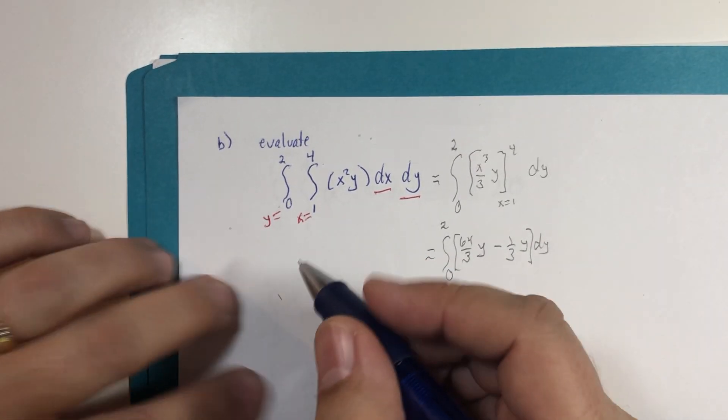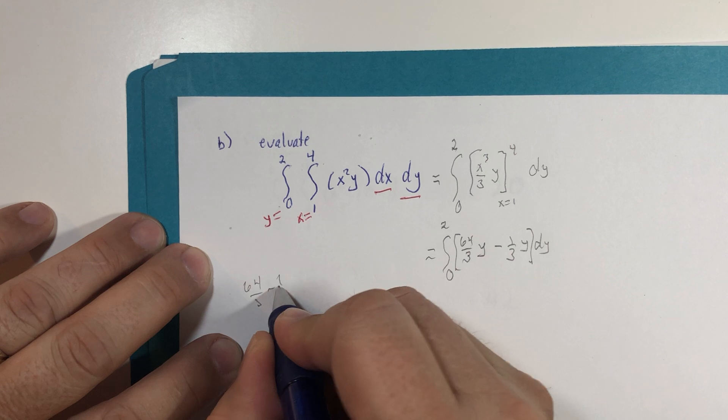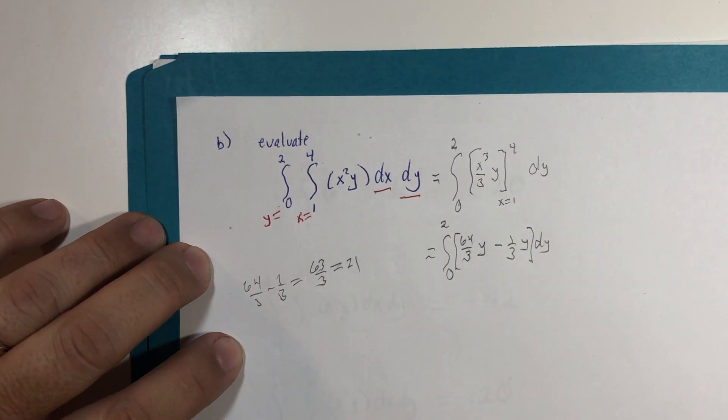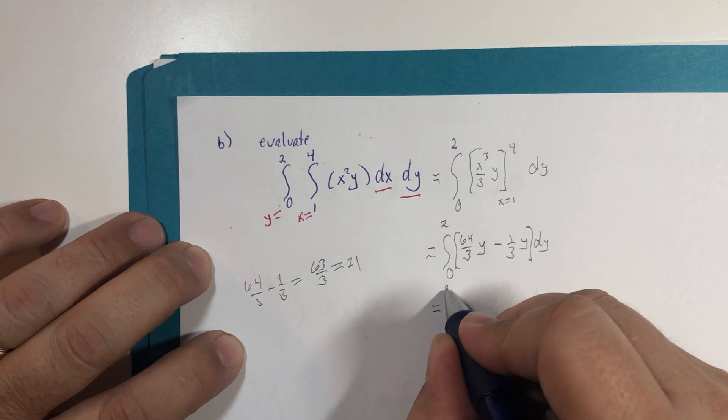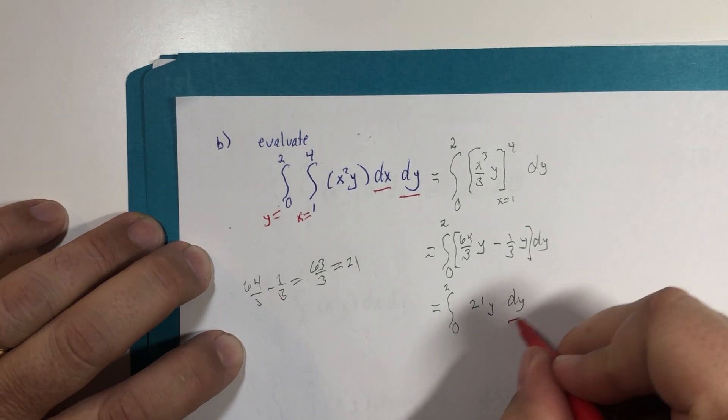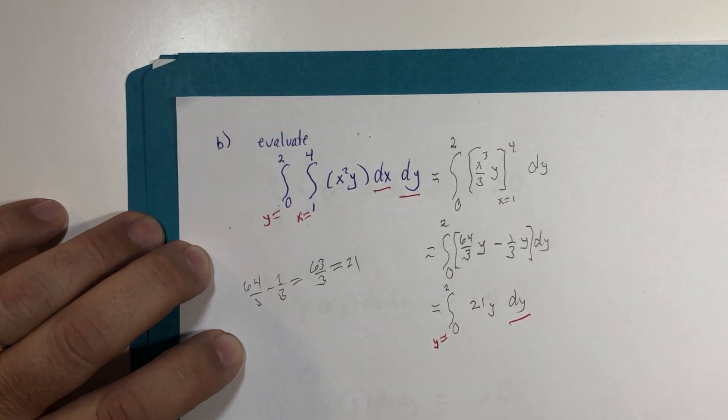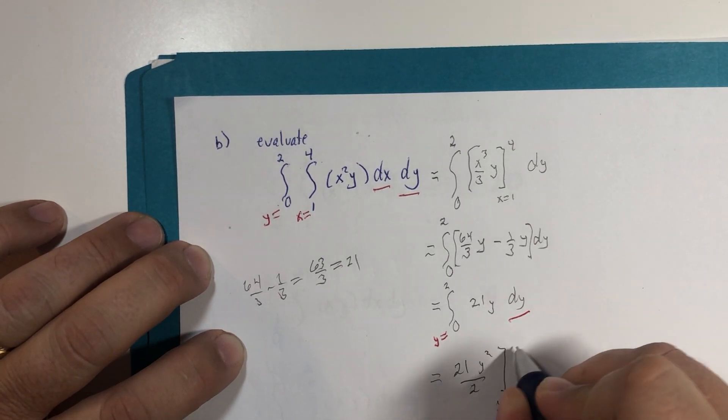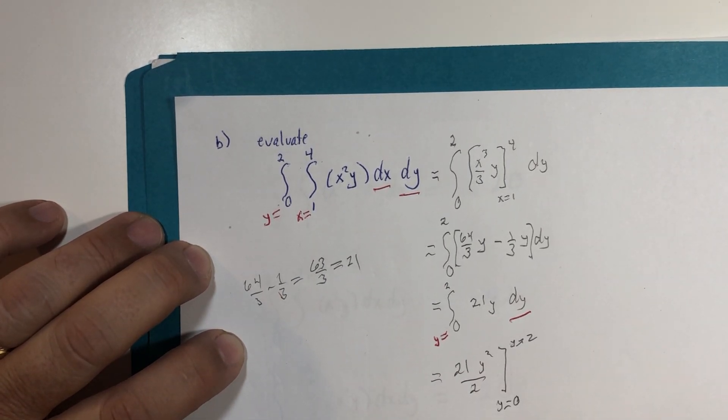Now, scratch paper. 64 thirds minus one third is 63 thirds, which is 21. So we're going to be integrating from zero to two, 21y with respect to y. And just a note that says y. So that makes this y equals also. And integral of y is y squared divided by two. And we're going to evaluate from y is zero to y is two. 21 times two squared minus zero squared. That's four over two is two times 21. 42.